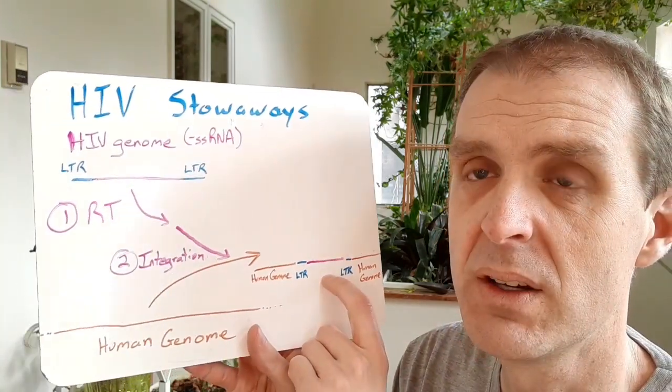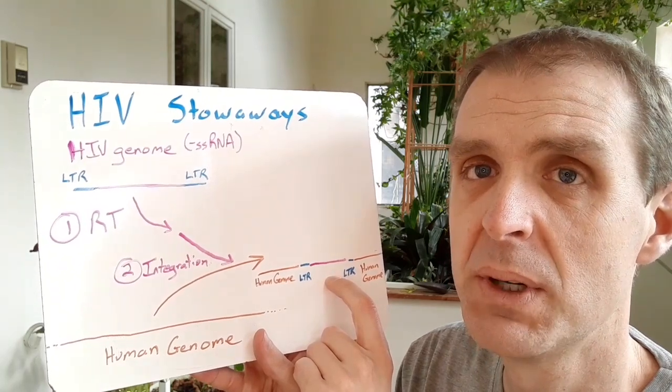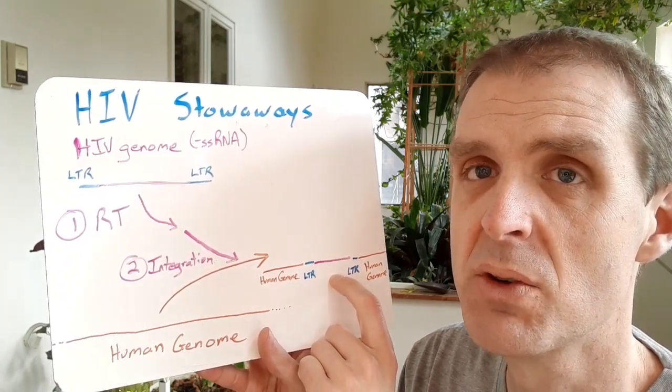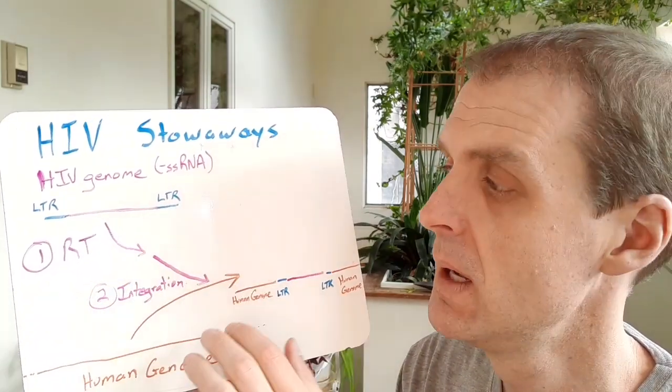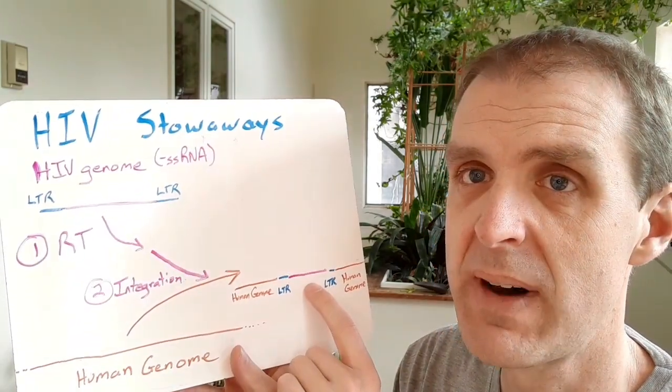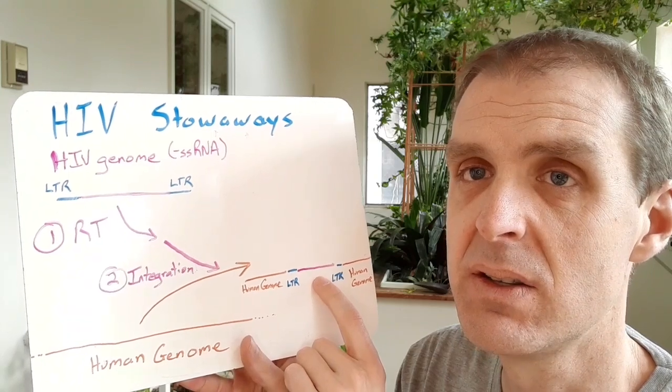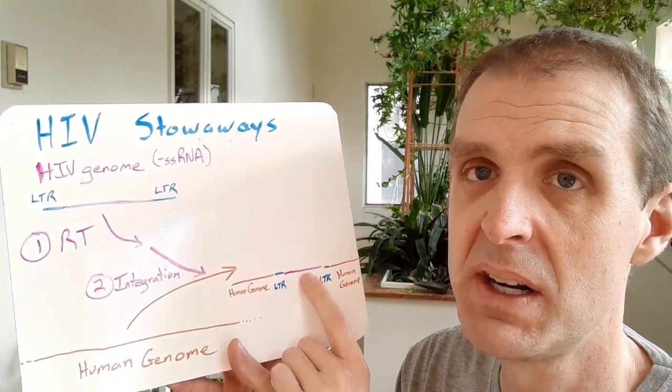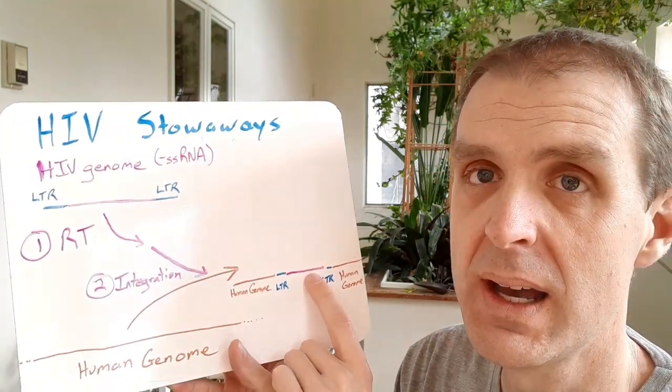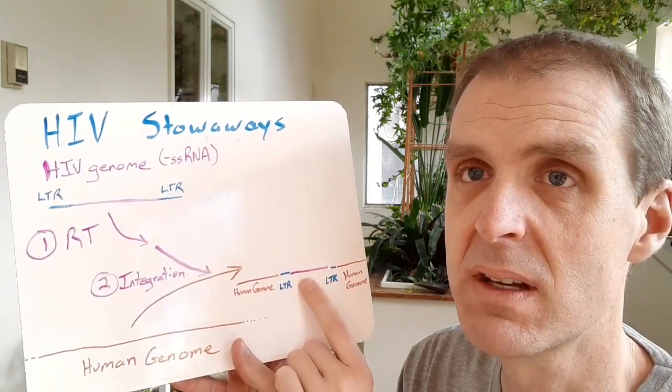We have a lot of good HIV drugs right now, but the problem is those drugs mostly just work on viruses that are actively replicating. If the genome of the virus gets integrated into the genome of the human cells, then those cells can go on and replicate or hang out.